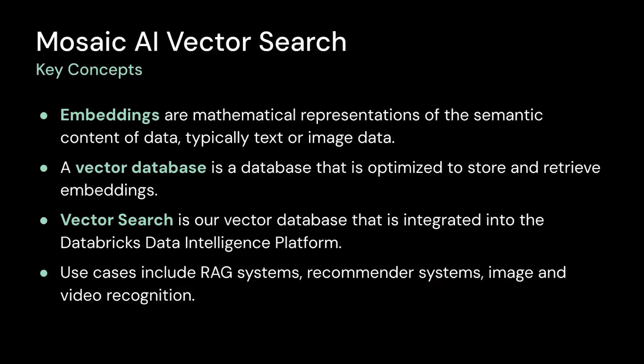A vector database is a database that is optimized to store and retrieve those embeddings. Vector Search is a vector database that is built into our Databricks data intelligence platform. It stores vector representations of your data plus metadata. It is tightly integrated with Unity Catalog and highly scalable, providing a low latency production service with zero operational overhead. It has a simple interface that makes it easy to query vector indexes. Some of the common use cases are RAG systems, recommender systems, and image and video recognition.